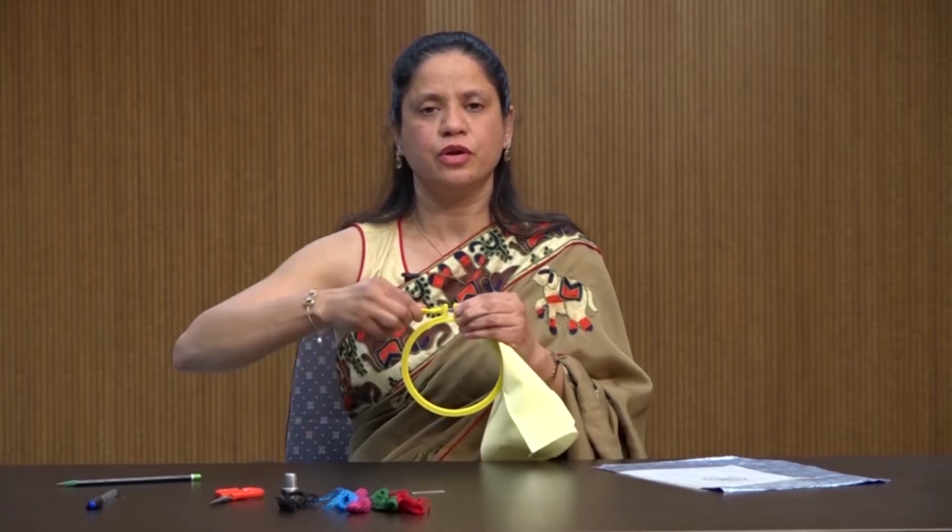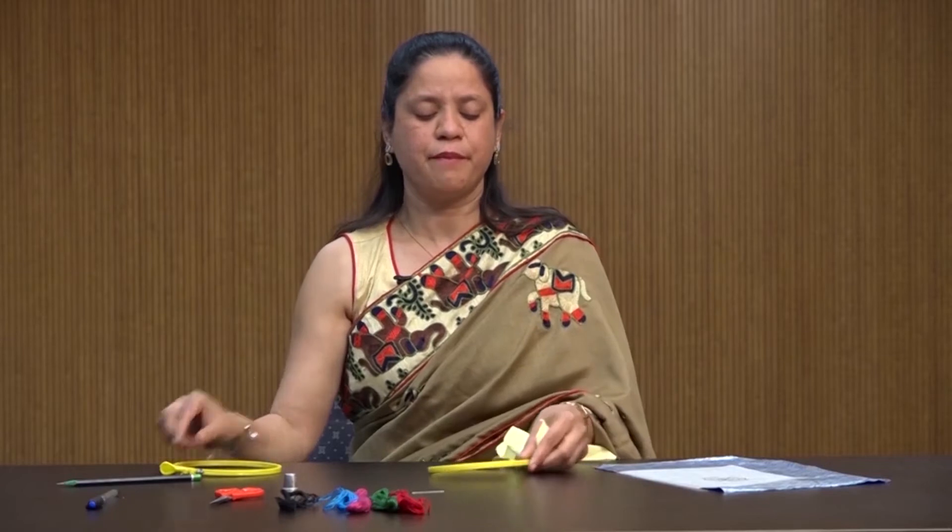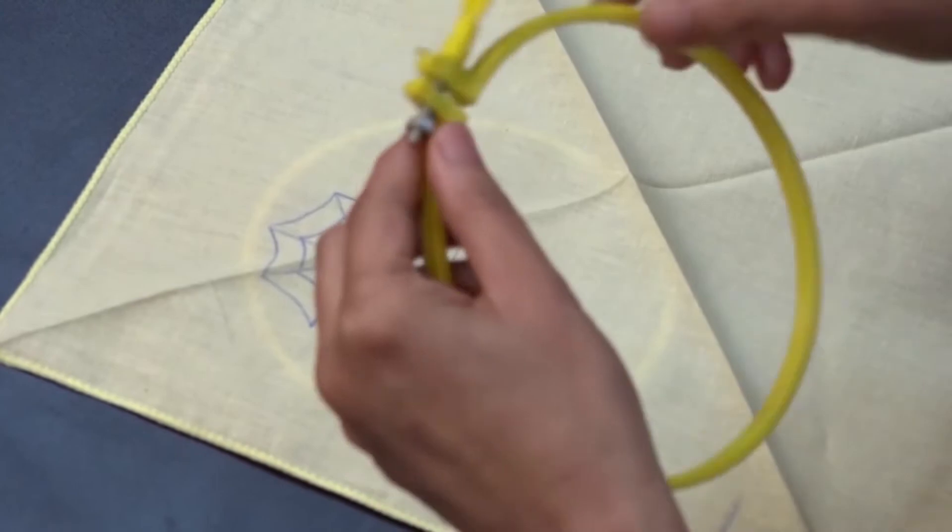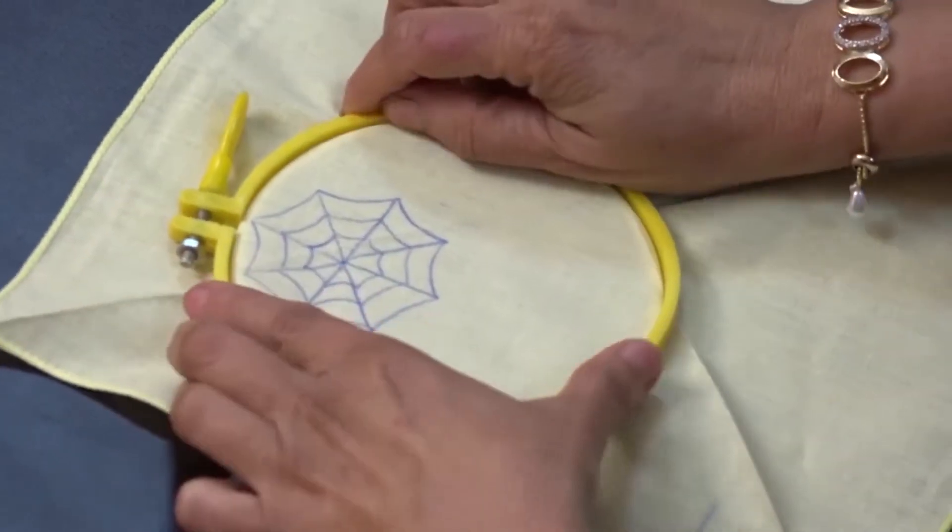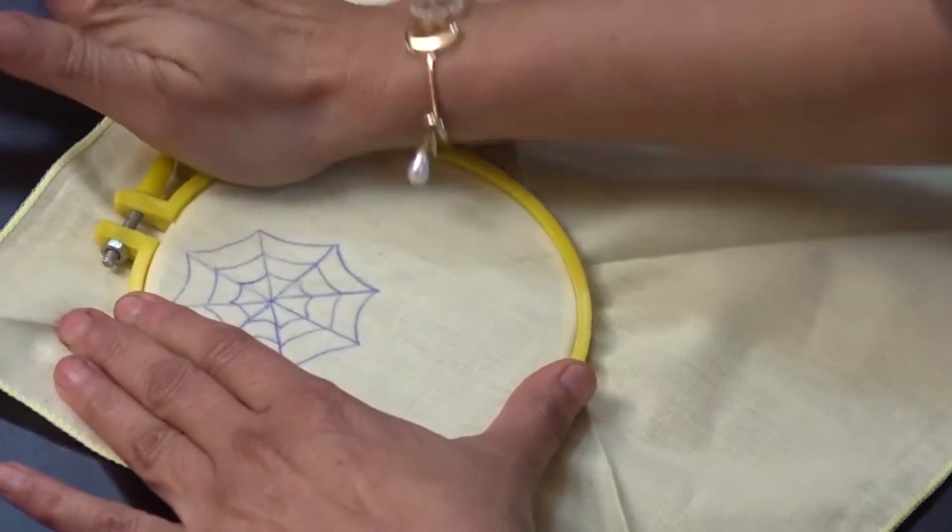For fixing, loosen the screw and separate the two rings. Place one ring under the fabric and the second ring above the fabric, and tighten the screw.